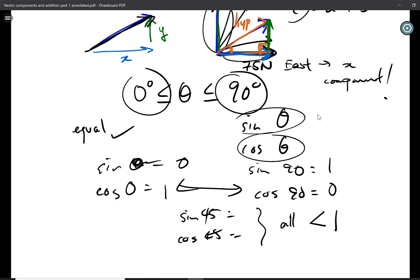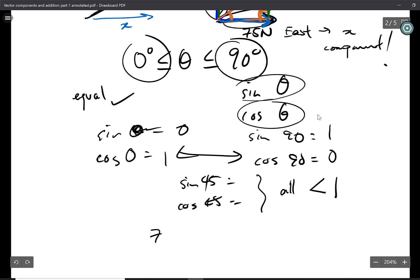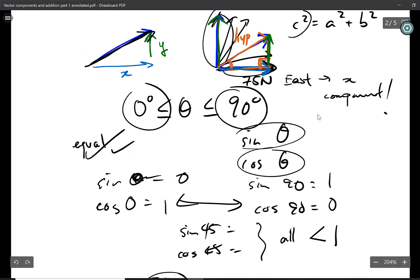So, notice, if you have a number that is less than 1, and you multiply that by the original vector itself, which in our last case was 75 newtons, you multiply any number less than 1, you're going to get a number that is less than 75 newtons. So that means your components can never, ever be larger than the magnitude of the original vector. They can be equal, but they cannot be larger.